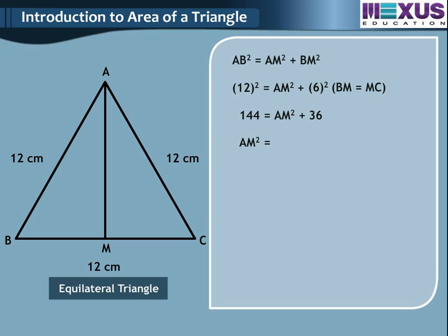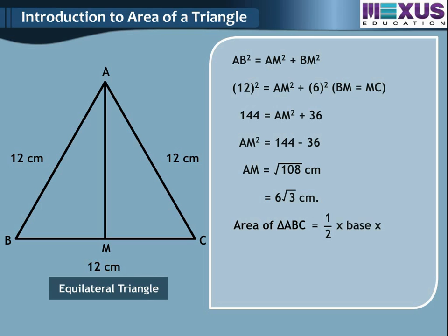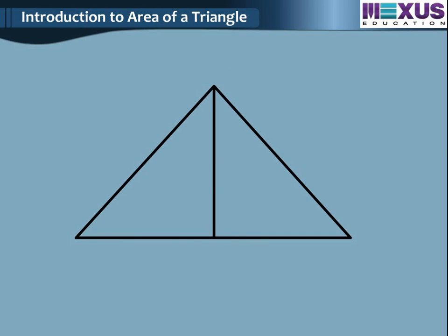AM square equals 144 minus 36. Hence AM is equal to square root of 108 cm, which equals 6 root 3 cm. Now, area of triangle ABC is equal to half multiplied by base multiplied by height, equal to half into 12 into 6 root 3, which equals 36 root 3 cm square.